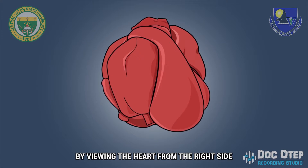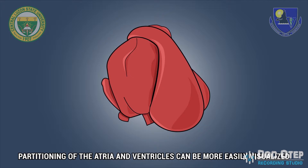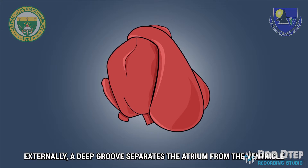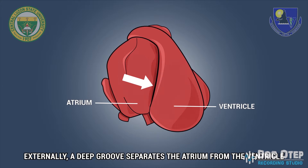By viewing the heart from the right side, partitioning of the atria and ventricles can be more easily visualized. Externally, a deep groove separates the atrium from the ventricle.